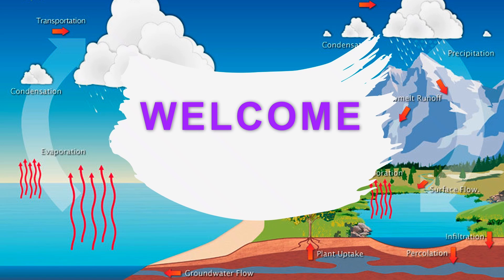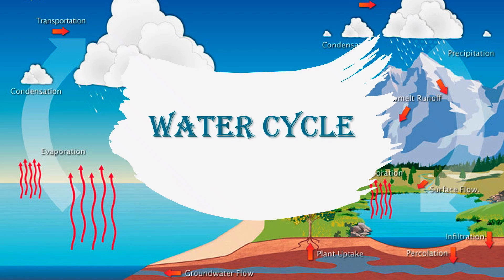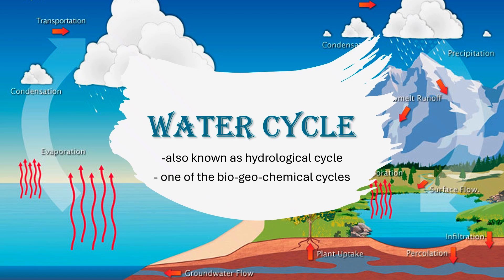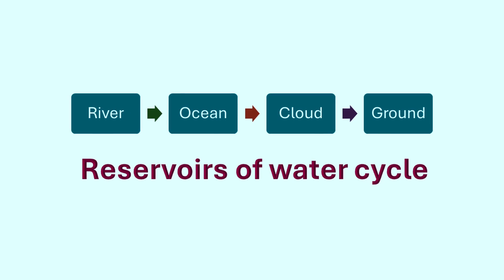Hello and welcome. Today's topic is the water cycle or hydrological cycle. The water cycle, also known as the hydrological cycle, is the continuous process of water circulation on Earth.